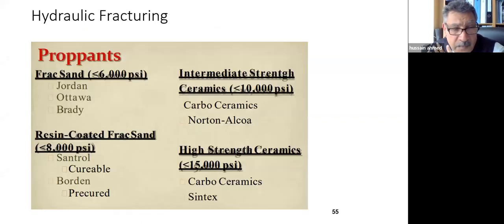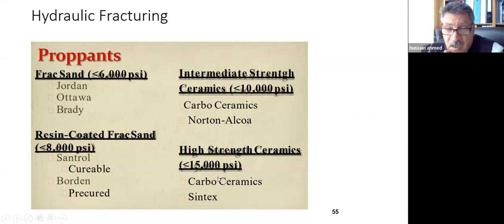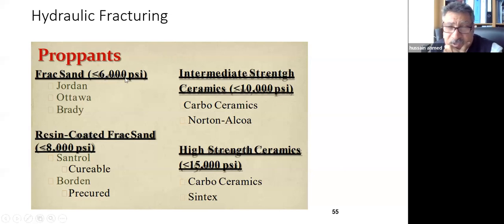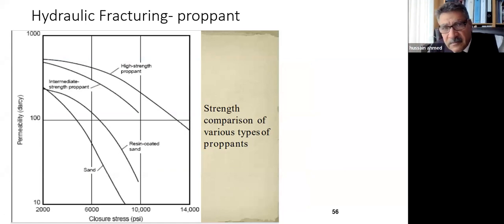There are good sands from Jordan and also Carb-Ceramic from certain mountains. When choosing proppants, study their crushing strength. Sand can be crushed at less than 6000 PSI. When I choose the proppant I ask: what is the crushing strength, and can it maintain the pressure inside the well without getting crushed? If it becomes powder there is no use — you lose your fracture.